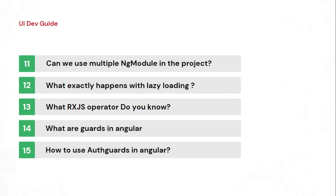The next question is related to lazy loading — what exactly happens with lazy loading? Most people say it loads on demand, only when something is called. The counter question would be: when your application is built and the dist file is created, is your module inside the bundle or not? You can try creating one eager module and one lazy module with ng build to see the bundle. You'll find that the lazy module is already there in the bundle but is not loaded into the zone.